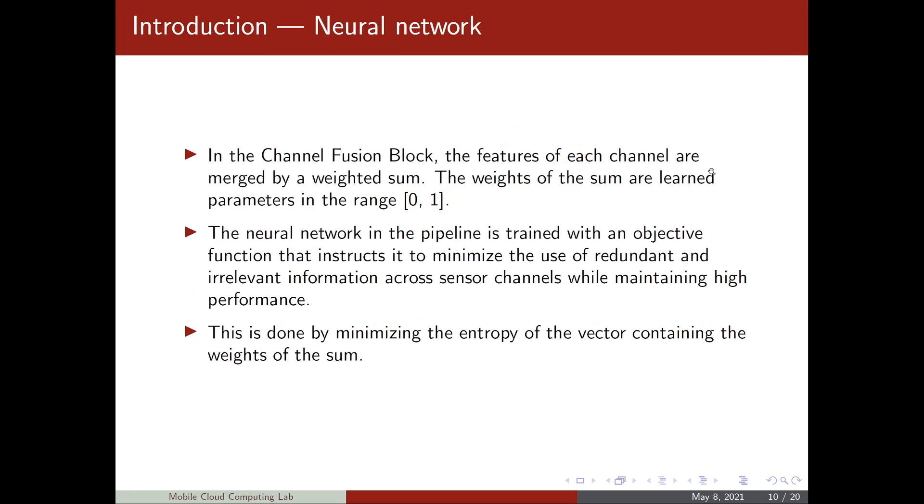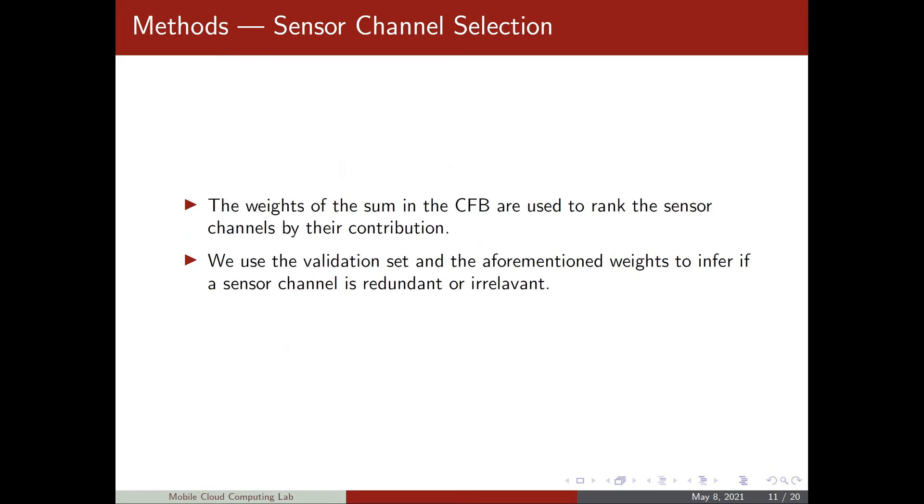In the channel fusion block, the features of each channel are merged by a weighted sum. The weights of the sum are learned parameters in the range from 0 to 1. The neural network in the pipeline is then trained with an objective function or loss function that instructs it to minimize the use of redundant and irrelevant information across sensor channels, while of course maintaining high performance. This is done by minimizing the entropy of the vector containing the weights of the sum, apart from the cross-entropy that's usually used for classification tasks.